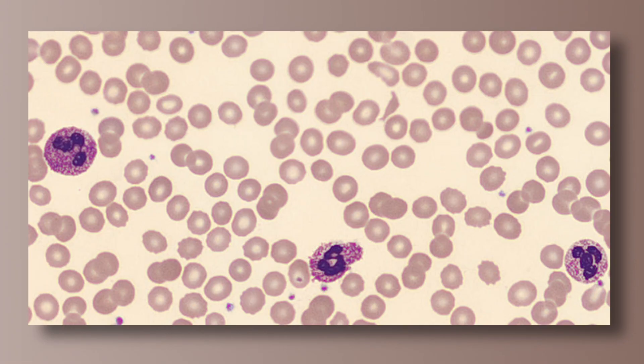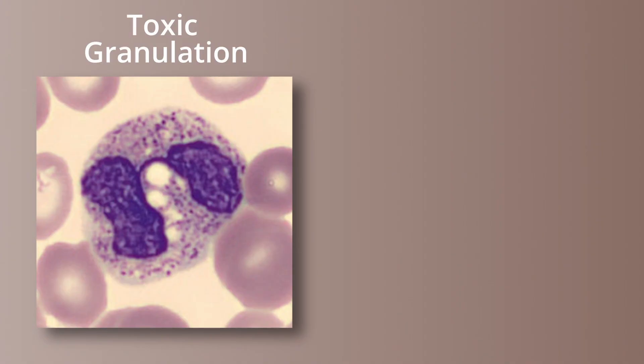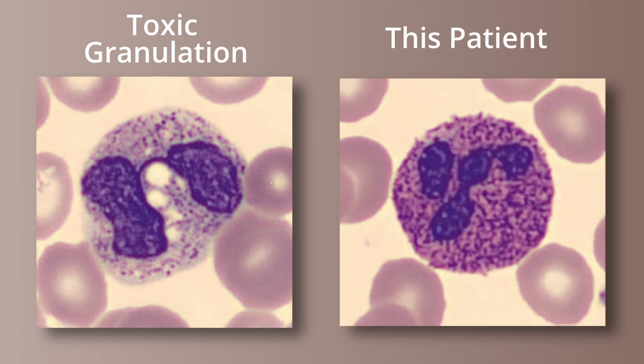So to start, you look down a microscope and see this toxic granulation, but something seems off about it. Here's regular toxic granulation — the granules are different sizes and look like they are thrown on. Here's what we have on this slide: the granules seem too consistent.